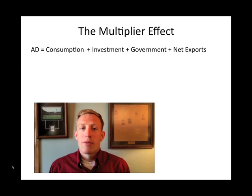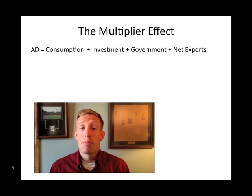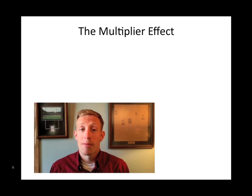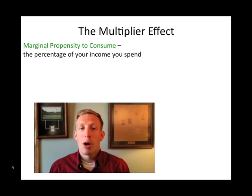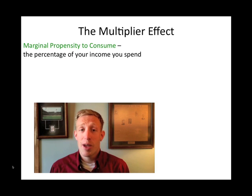The ability of government policy — of government spending — to affect the aggregate demand will then become dependent upon how much of that newfound income people decide to spend. This is sometimes referred to as the marginal propensity to consume. The marginal propensity to consume is simply a fraction, a percentage of how much of your income you're going to spend.